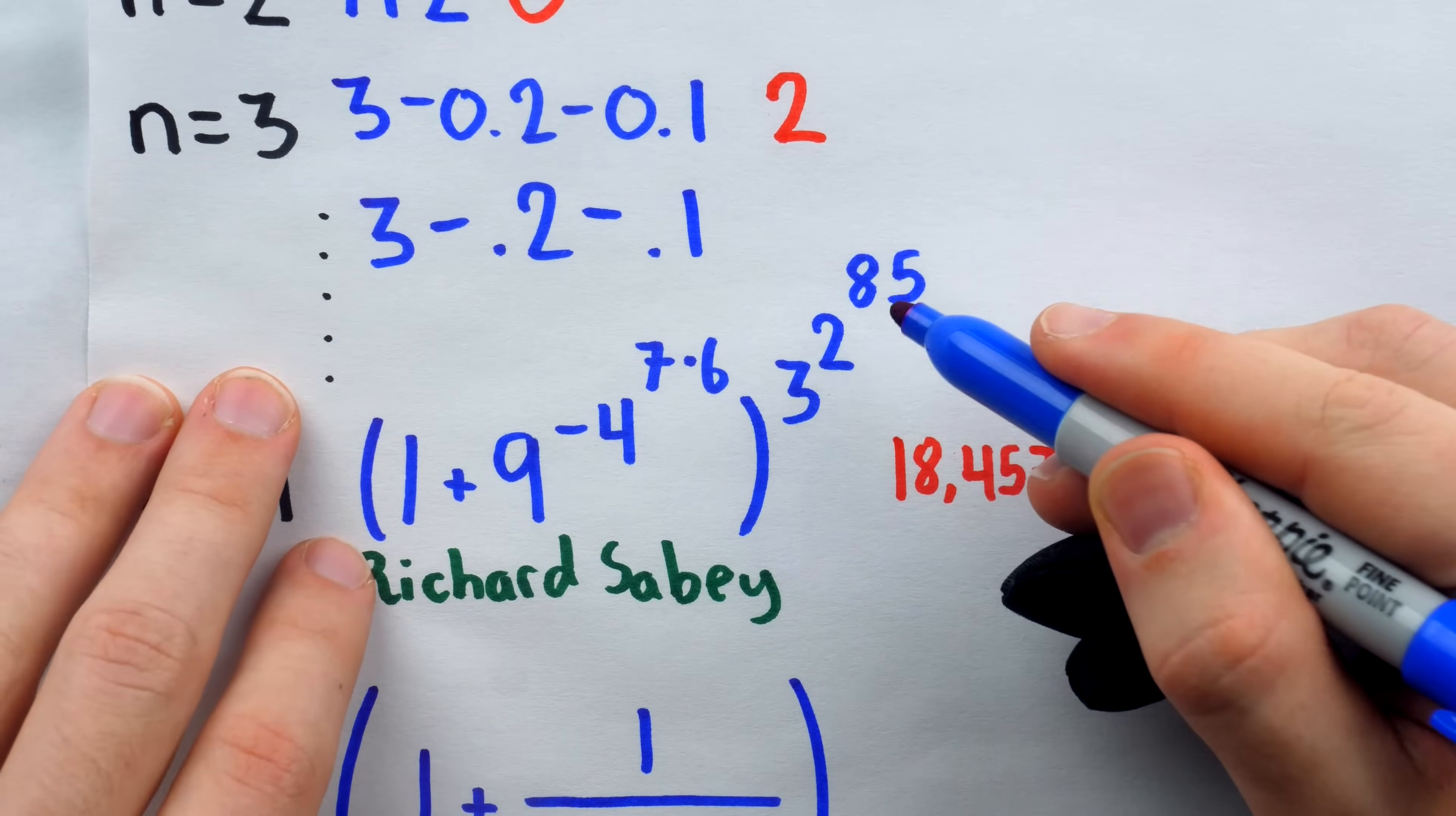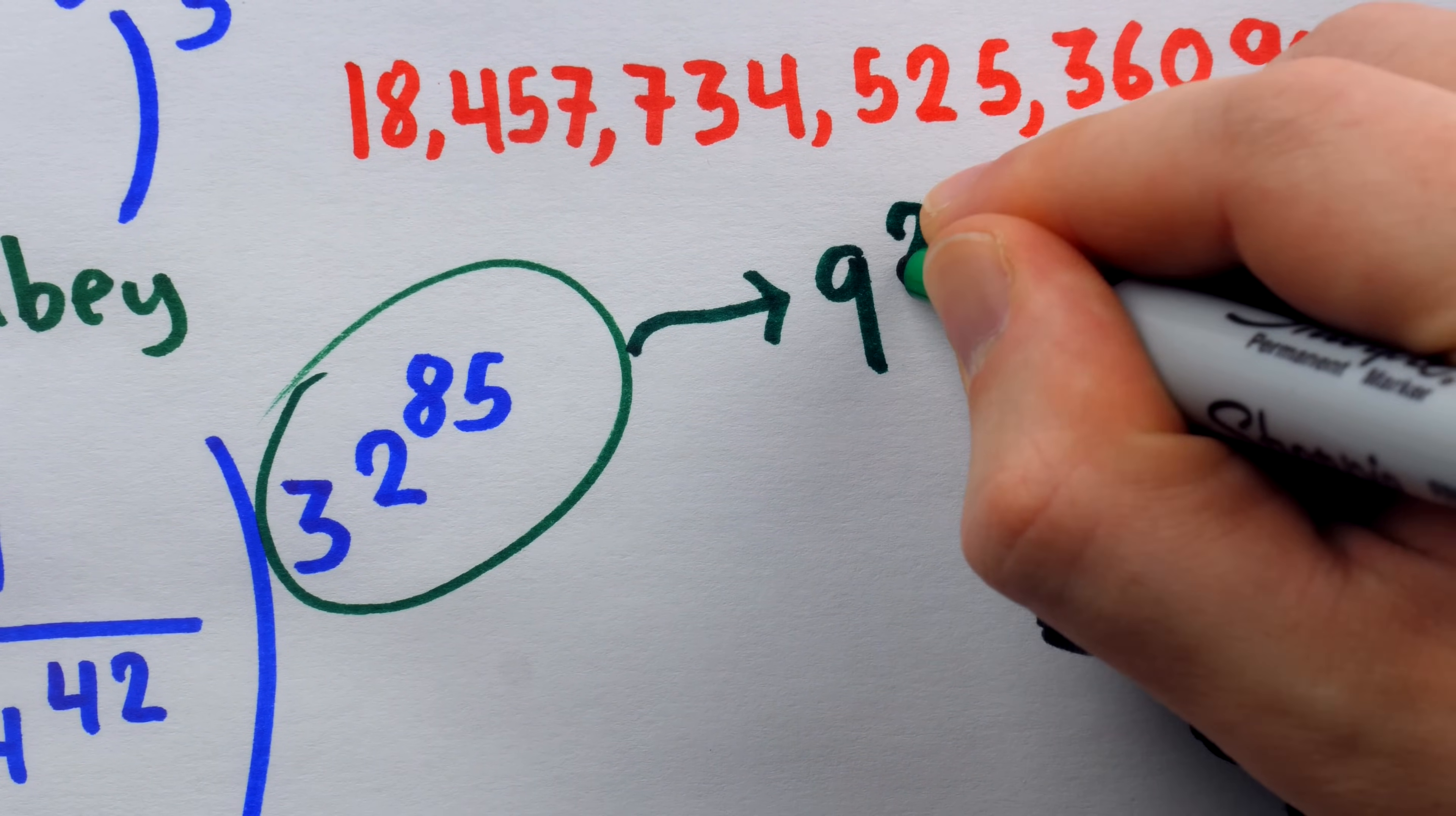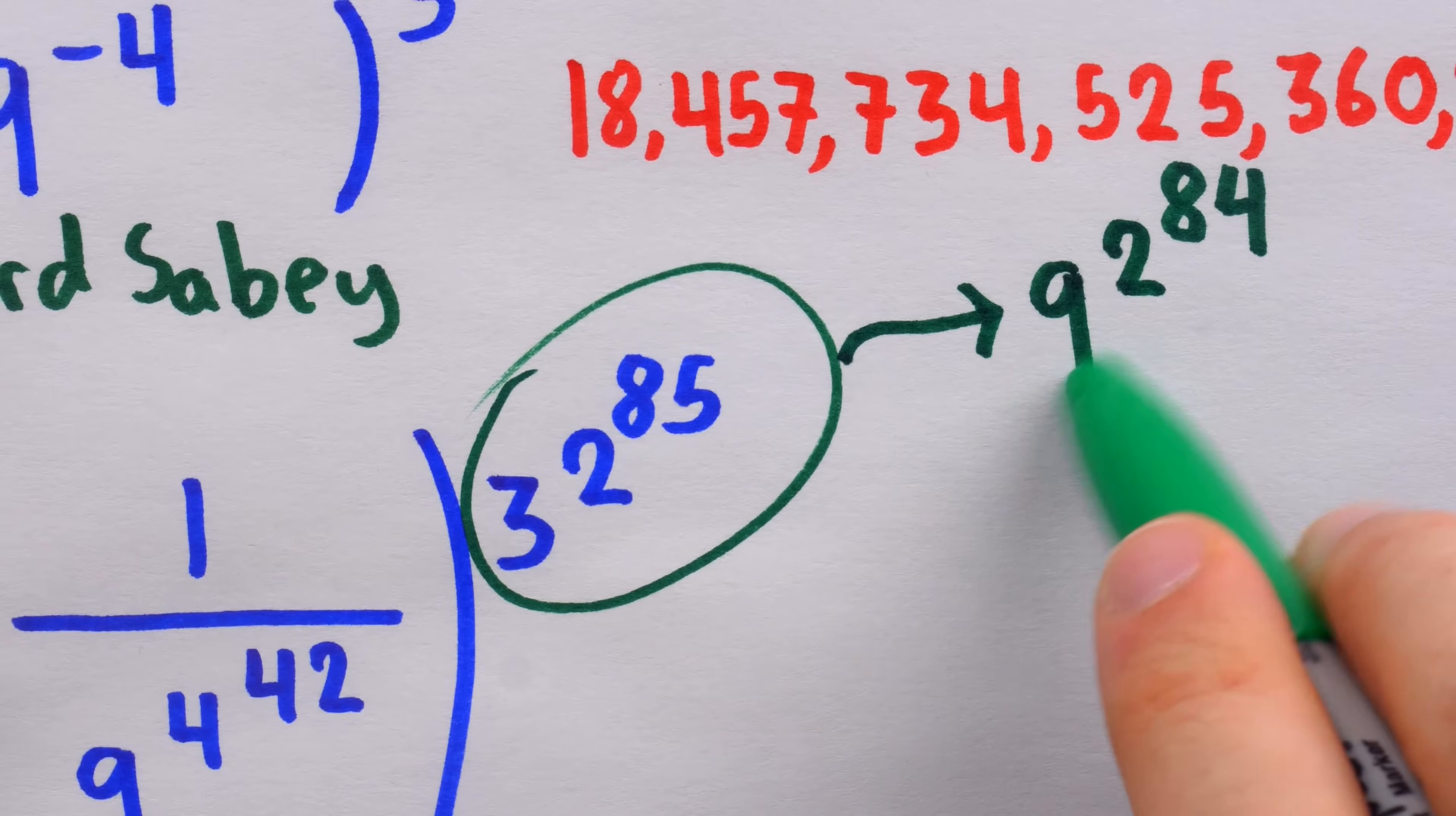So looking at this exponent, this says we have 85 factors of 2 in the exponent of 3. If we take one of those factors of 2 and apply it to 3 now, then we can rewrite this exponent as 9 to the power of 2, now to the power of 84. 3 squared is 9, so now we have one less factor of 2. Remember, we're just trying to make this look like this, and hopefully find that it's really just this expression from the definition of e.